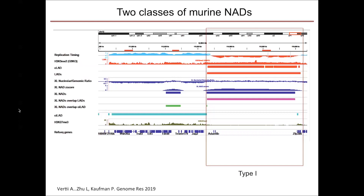We also observed a different type of NADs, which we termed Type 2 NADs. In contrast to Type 1, these tend to replicate early and are decorated by H3K9me2 marks. However, they do not overlap with constitutive LADs or MEF LADs; instead, they overlap with constitutive inter-LADs — regions never found to be associated with the nuclear periphery. Type 2 NADs are enriched in H3K27me3 marks, and gene density is much higher than in Type 1 NADs. We identified these two classes using both cross-linked and non-cross-linked methods.